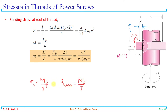M is the moment acting on this cantilever beam. In reality, the load on the thread is distributed, but for simplicity we consider the entire load concentrated at the middle of the thread — at the center of its square shape. So our moment becomes F multiplied by p/4, which is half of p/2. The moment is F × p/4.